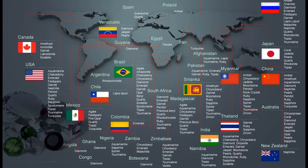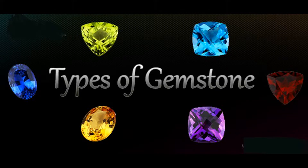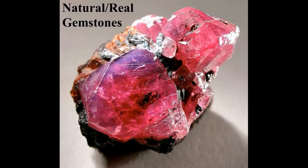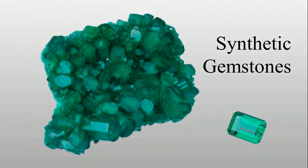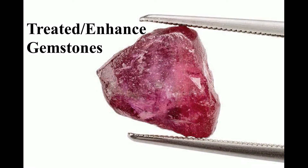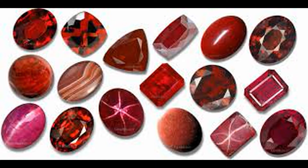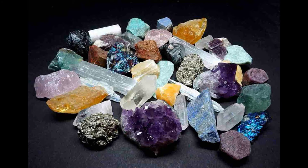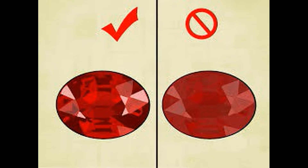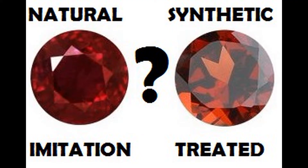Gemstones available around the world normally fall under four basic categories with regards to authenticity: 1) natural or real gemstones, 2) synthetic gemstones, 3) imitation gemstones, and 4) treated or enhanced gemstones. It is difficult even for an experienced gemologist to identify and classify a stone into one of these categories, let alone for a common person. For example, if a person purchases a ruby, it is extremely difficult to know whether the stone is natural, synthetic, imitation, or treated. The objective of this video is to give a brief overview to buyers and gem lovers regarding these groups.